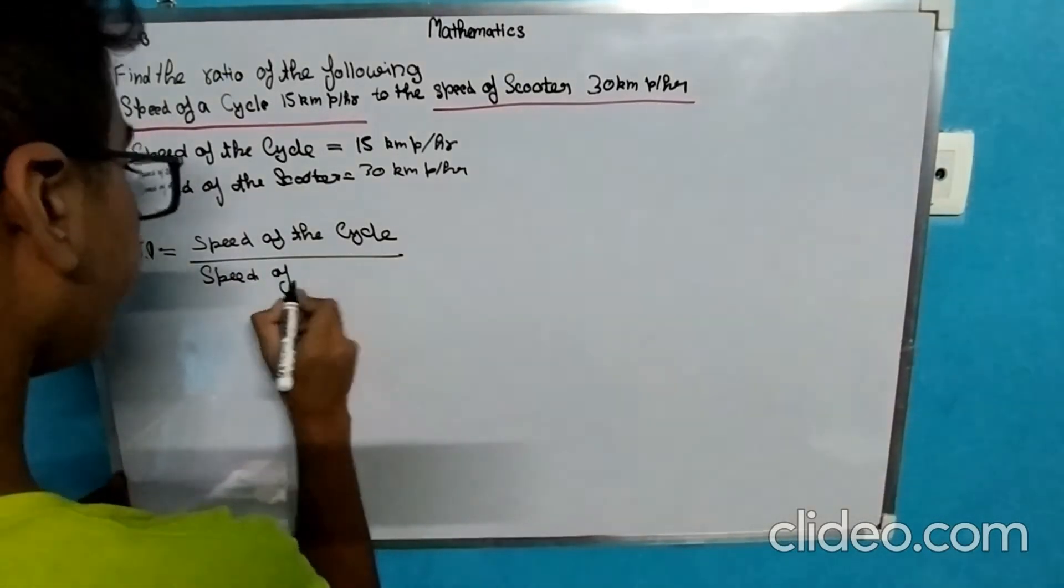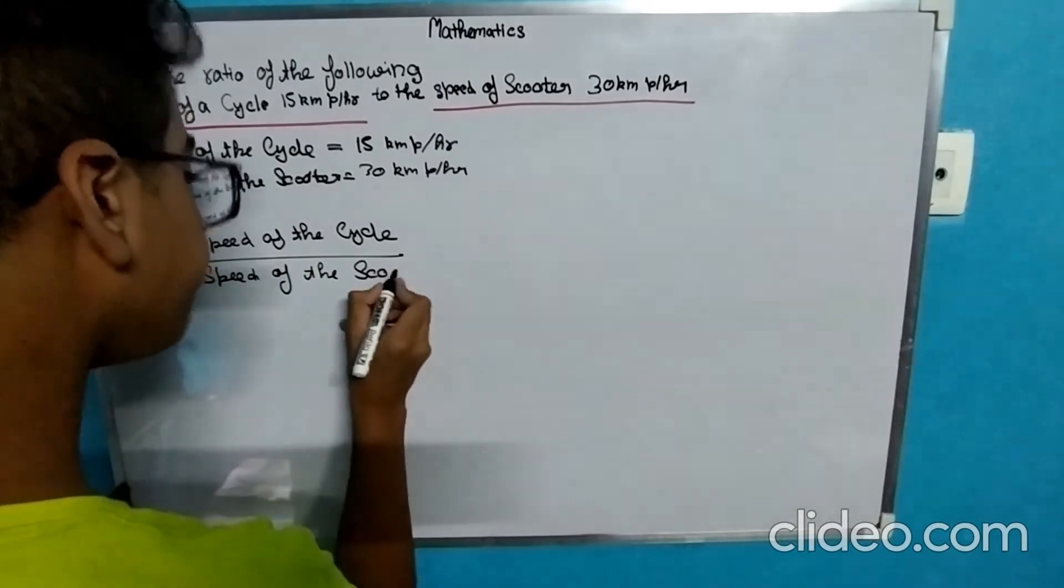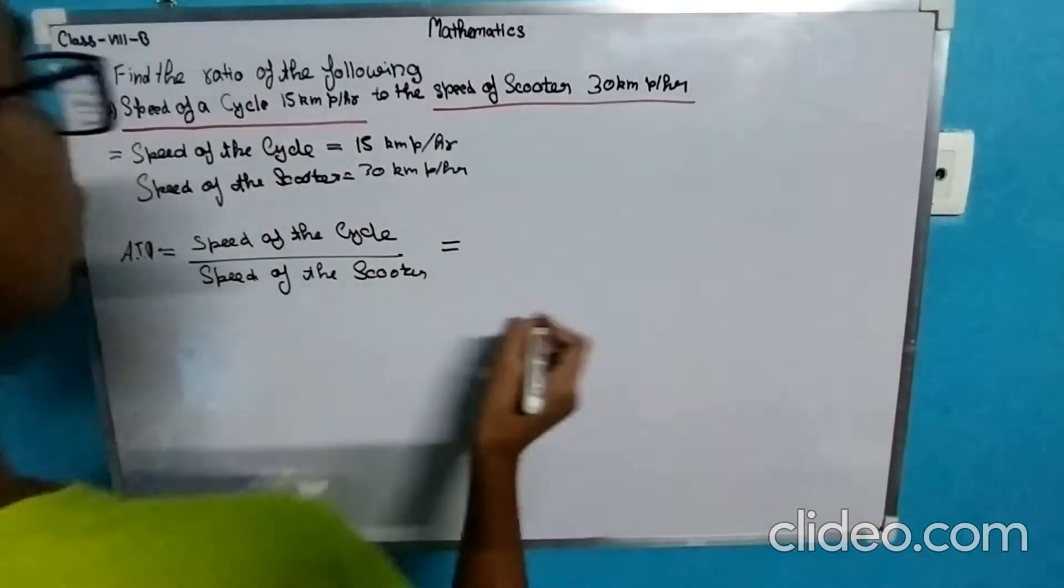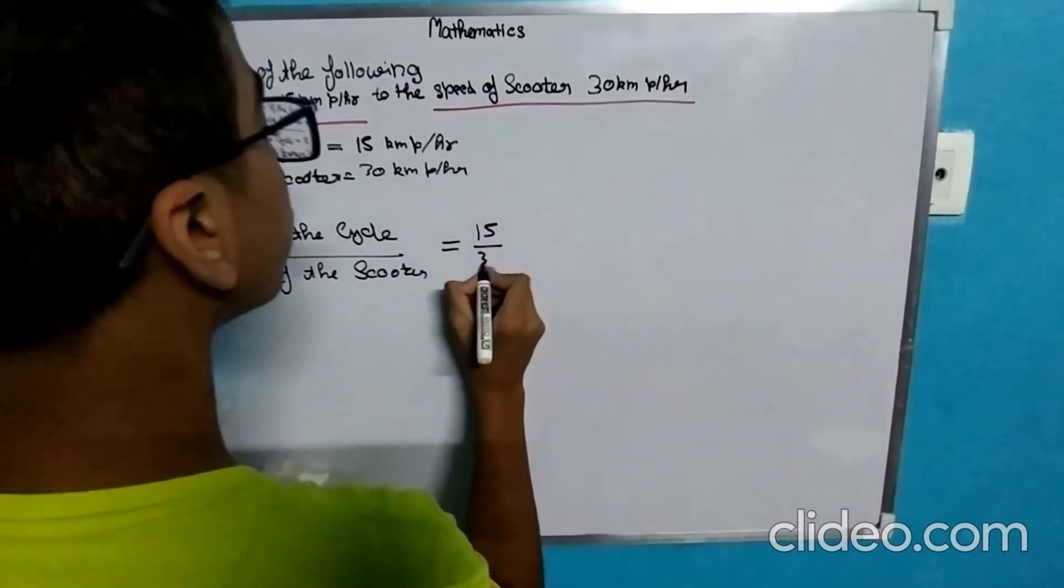speed of the scooter. So now let's put the values in this equation. The values are 15 upon 30.